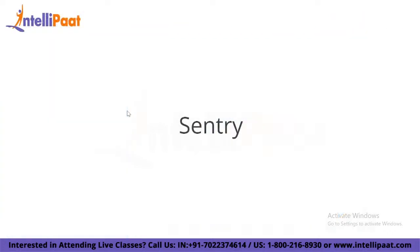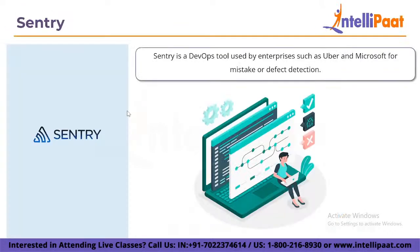Sentry is a DevOps tool used by enterprises such as Uber and Microsoft for error or defect detection. This free tool supports languages such as Ruby, iOS and JavaScript, and includes customizable SDKs that support the majority of languages and frameworks. The program continuously searches lines of code throughout the system and provides notifications if it discovers an issue or problem. It not only highlights the issue but also provides a list of suggested solutions that may be implemented within a single click.